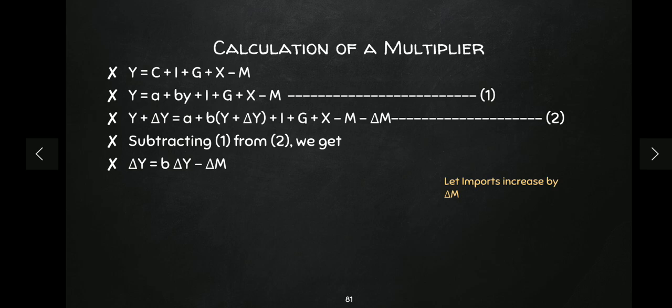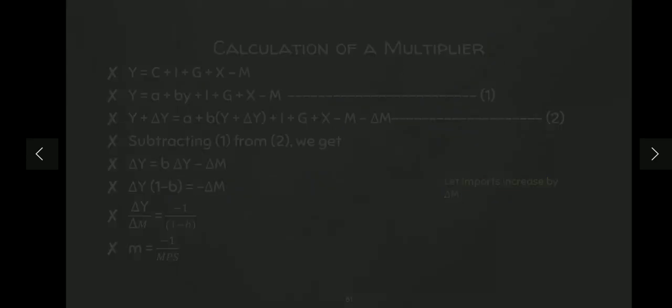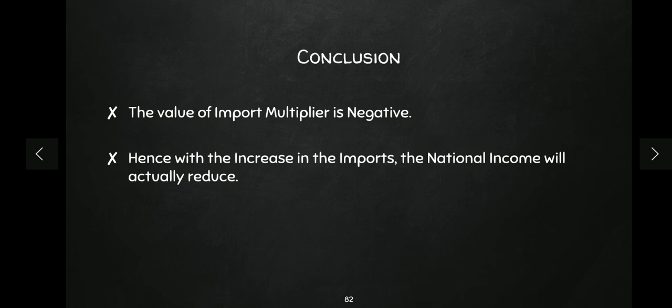We are left with: delta Y = b(delta Y) − delta M. Notice the minus sign is very important here. Taking delta Y terms to the left-hand side, we get the import multiplier value as minus 1 upon (1 − b) — that is, minus 1 upon marginal propensity to save. The absolute value is the same as the export multiplier, but here we have a negative sign.